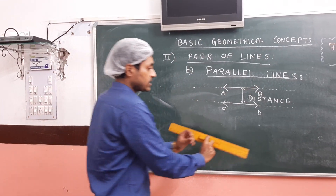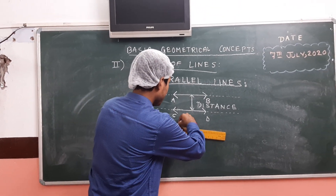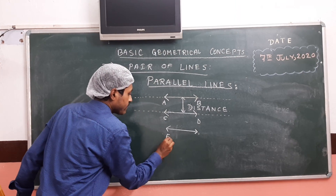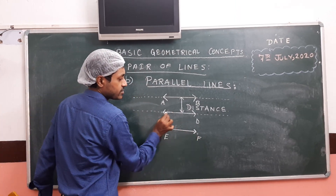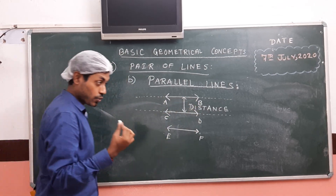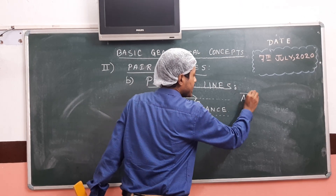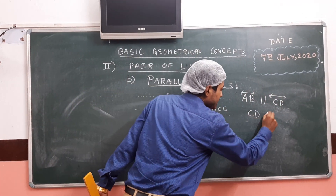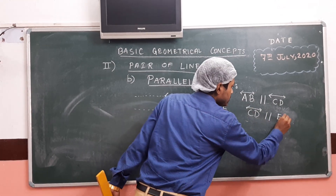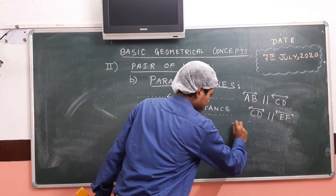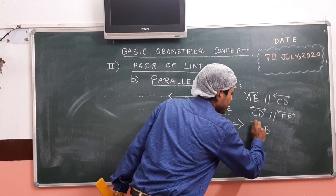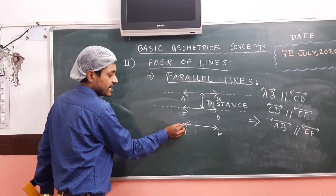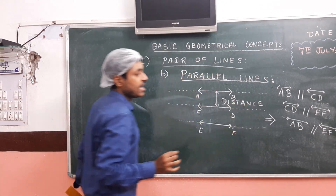These two lines are called parallel lines. A third line EF drawn parallel to CD will automatically also be parallel to AB. We denote this as: line AB is parallel to line CD, and line CD is parallel to line EF. Therefore this is a set of parallel lines, and we can extend them indefinitely — they will never meet.